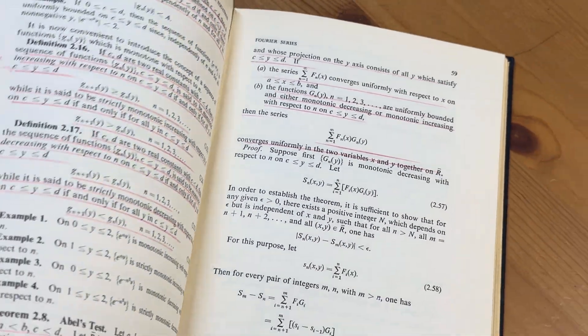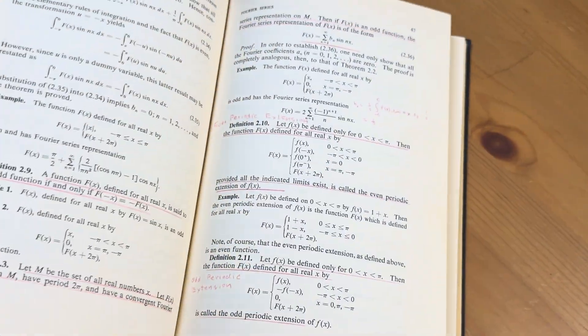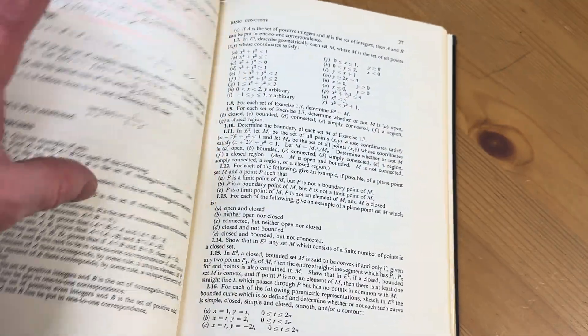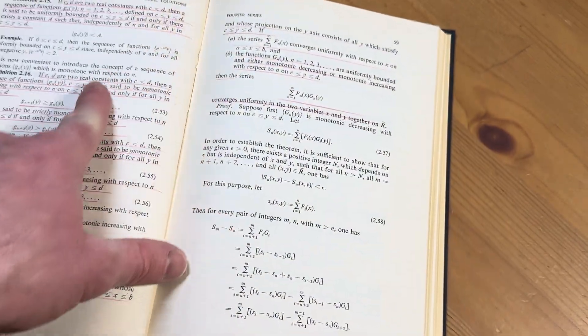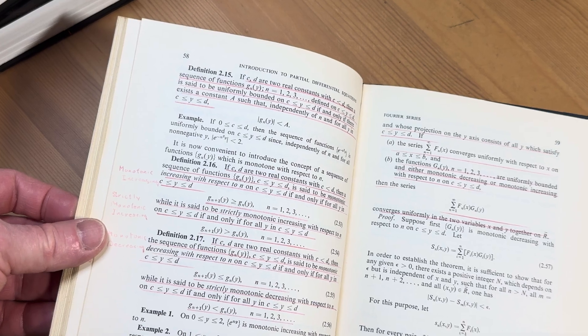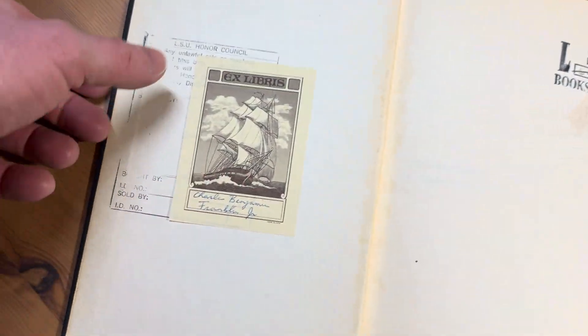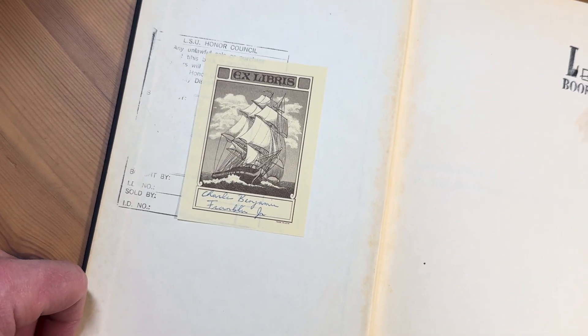I have other PDE books, partial differential equations books, and to be honest, they're the same. They don't have that many answers. Whoever used this book before me, look at the effort. Look at that. Well, maybe it was this person here, Charles Benjamin Franklin Jr. Maybe he was related to Benjamin Franklin. Probably not.